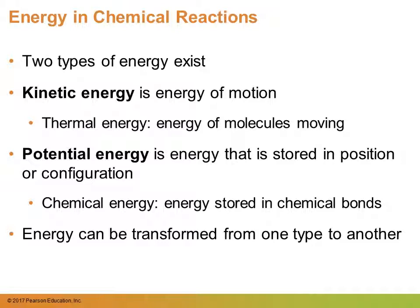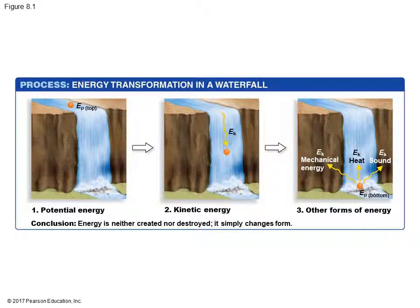Energy can be transformed from one type to another. Here's an example: a red ball on top of a waterfall starts up high — that's position, so that's potential energy. As the ball falls down with the waterfall it is in motion — that's kinetic energy. Then in frame three it hits the very bottom of the waterfall, making a loud noise — that's mechanical energy. So energy is released as mechanical energy, heat, and sound, and the initial high energy of the ball has been transformed.